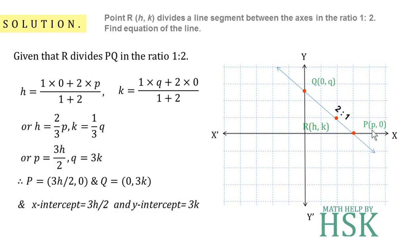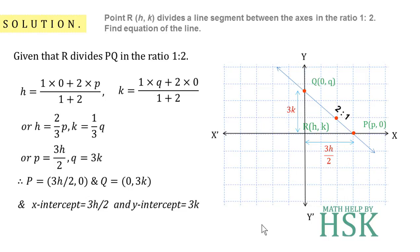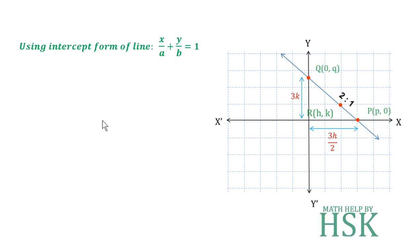In other words, the x-intercept is equal to p and p = 3h/2, so x-intercept = 3h/2. Similarly, the y-intercept is equal to q and q = 3k, so y-intercept = 3k. Now, using the intercept form of the line: x/a + y/b = 1.